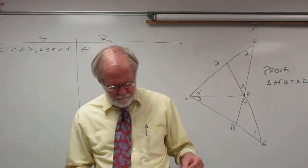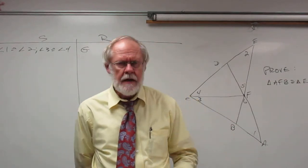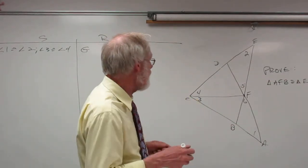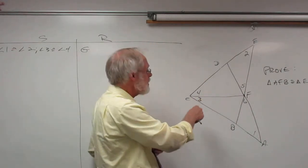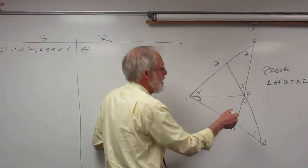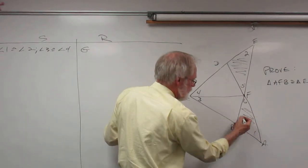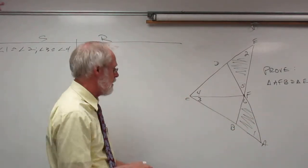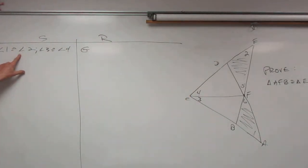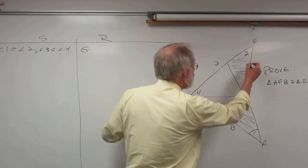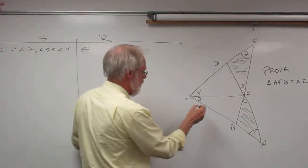I have the drawing up on the board. You are asked to prove this triangle over here congruent to this triangle over here. What we're given is: angle 1 is congruent to angle 2 — let's mark those — and angle 3 is congruent to angle 4.